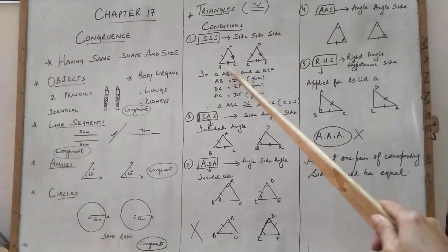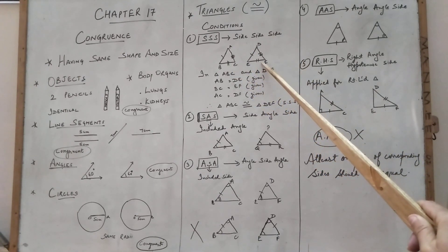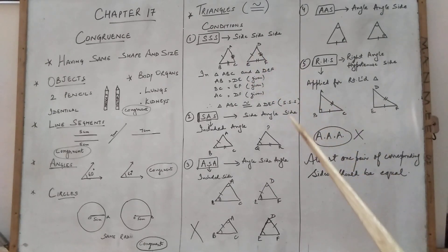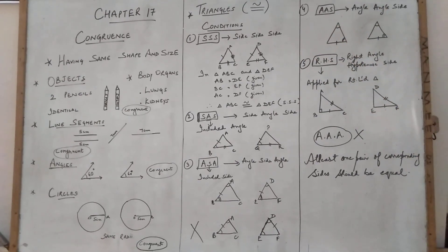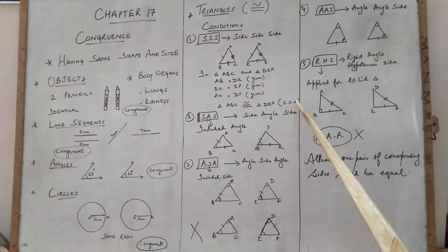So these two triangles, they are proving that they are having the same shape and size. So these two are congruent triangles. Then we have to tell which rule is applied here. Here the rule applied is the condition side, side, side.